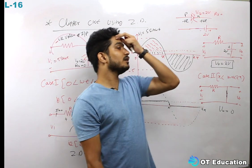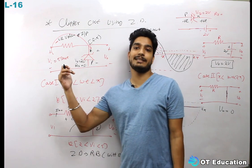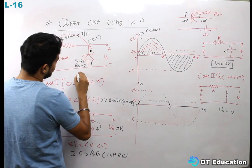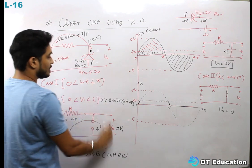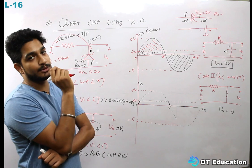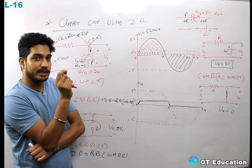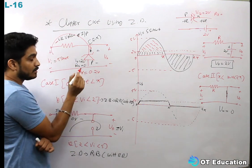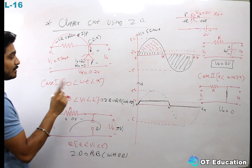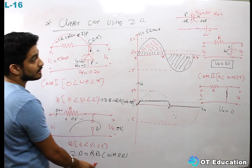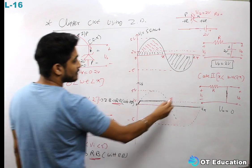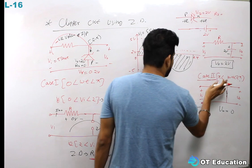Now let me add a refinement. When the Zener diode is in forward bias, we should consider V-gamma, the cut-in voltage of 0.2V. V-gamma is the cut-in voltage — this is a forward characteristic. So it will be used when the diode is in forward bias, which is in case 2: the π to 2π region.